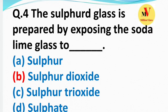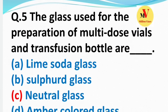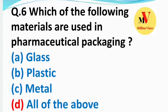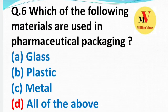Next question: The glass used for the preparation of multi-dose vials and transfusion water — the right answer is Type 1 glass. Next question: Which of the following materials are used in pharmaceutical packaging?